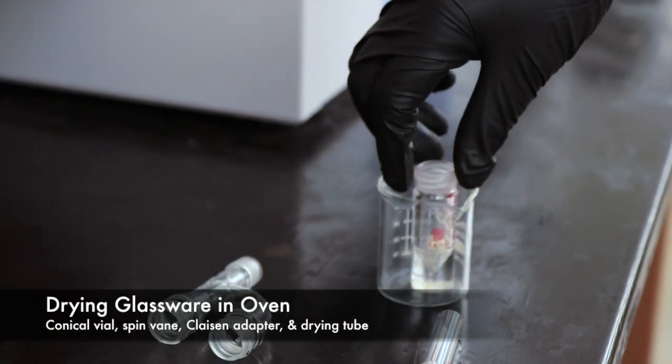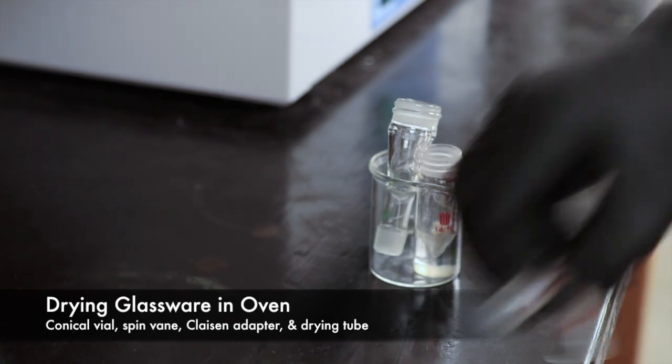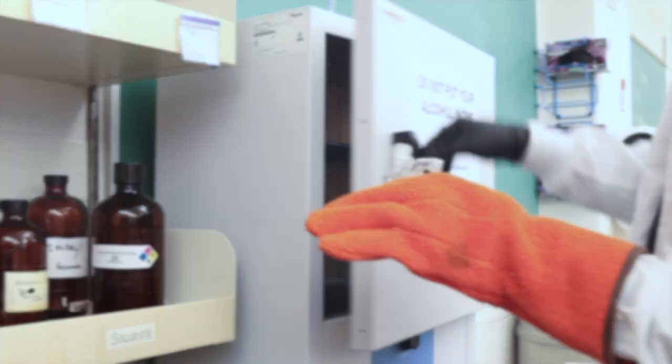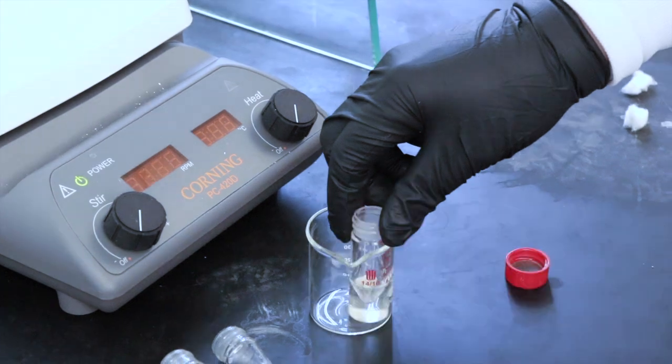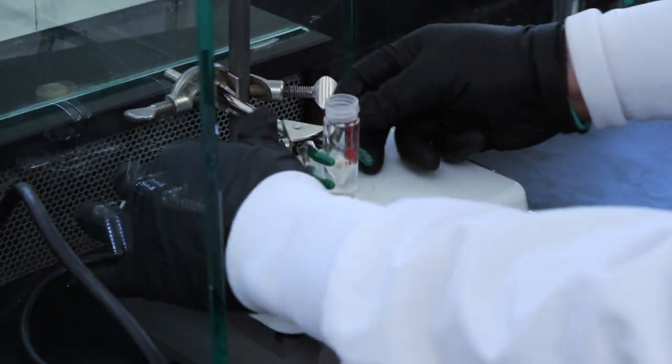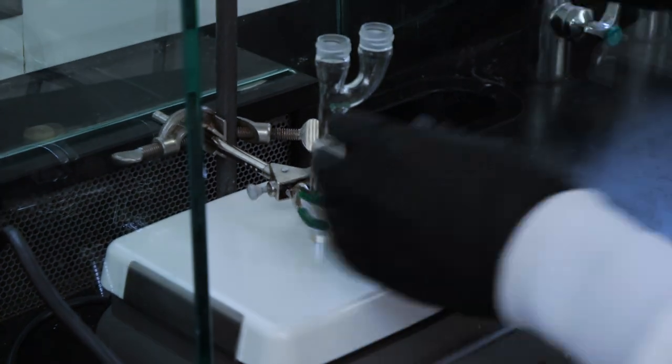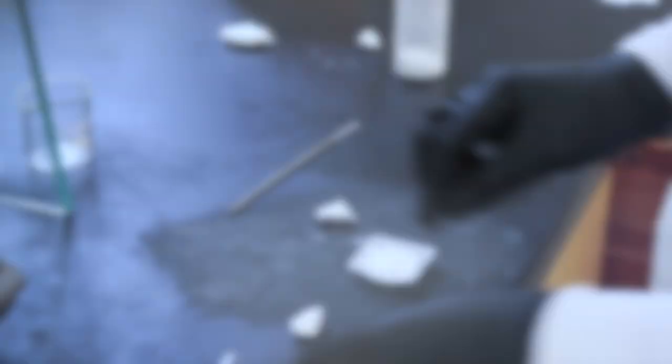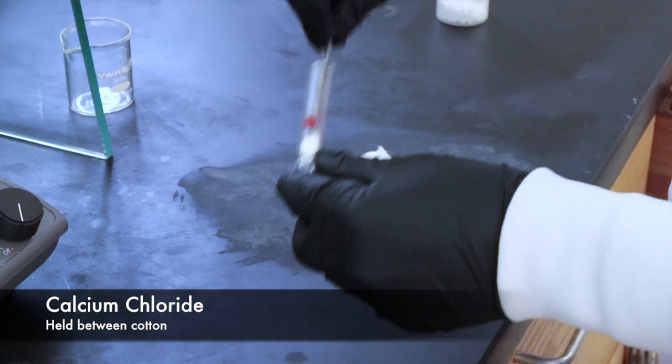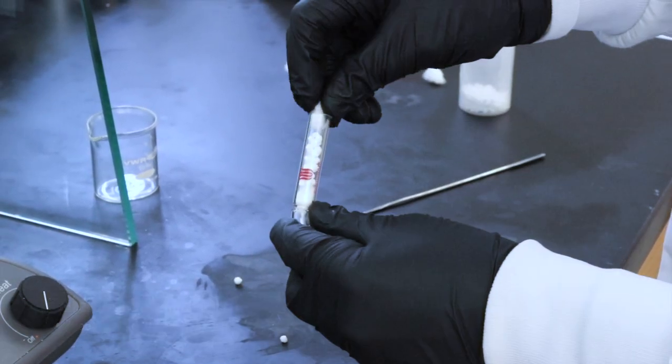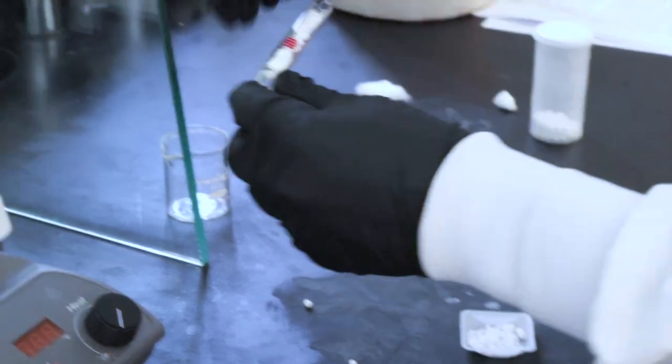I'm going to put all of the glassware in the oven. This includes the conical vial with a spin vane, the Claisen adapter, and the drying tube. And we'll leave them in there for about 10 minutes just to make sure everything is dry. Here I'm just going to set up the apparatus real quick making sure after adding the Claisen adapter to have the cap and septum so I can add the reagents. I'll add calcium chloride to the drying tube to absorb water from the atmosphere just to make sure that water doesn't react with our borane complex.